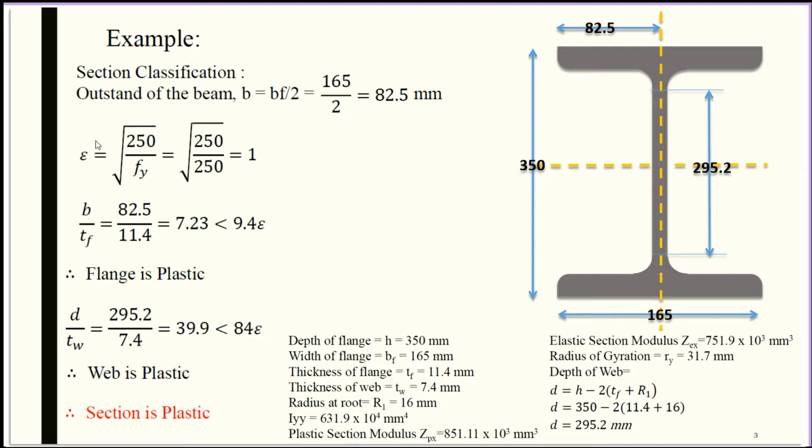For FE 410, FY = 250, so epsilon = √(250/FY) = 1. We are calculating B/TF ratio = 82.5/11.4 = 7.23, which is less than 9.4 epsilon. D/TW ratio = 295.2/7.4 = 39.9, which is less than 84 epsilon.